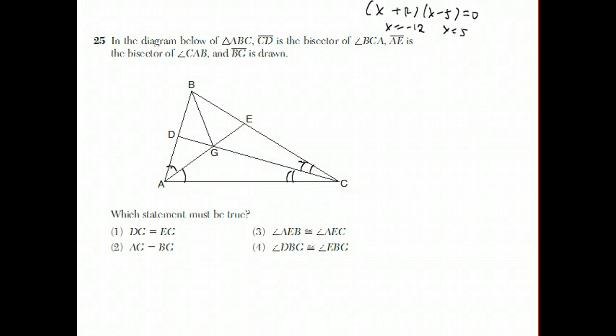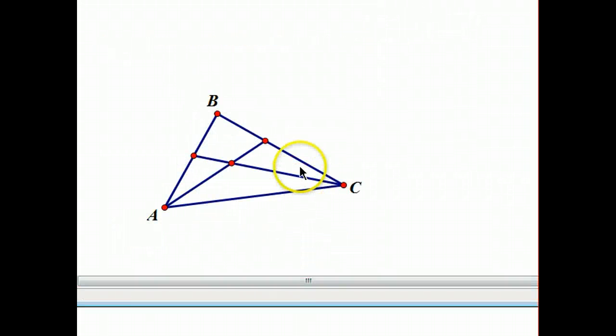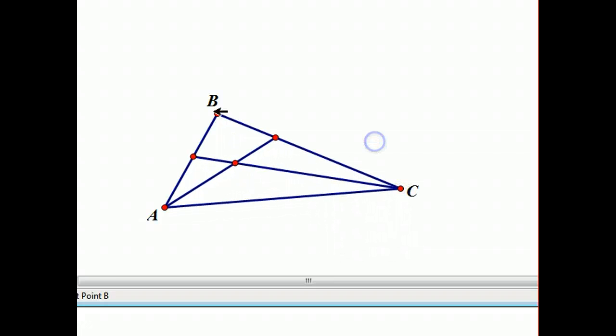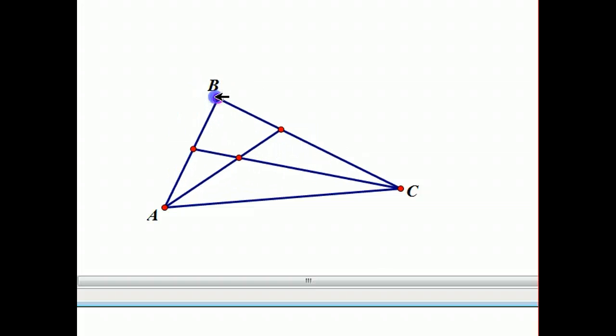They want to know what has to be true. So basically we have these two angle bisectors, and they came together at point G. Now I think what they're getting at in this problem is that there's a rule from geometry that if you have two angle bisectors, they intersect at a point. And if you draw the third angle bisector in, it will intersect at that point also.